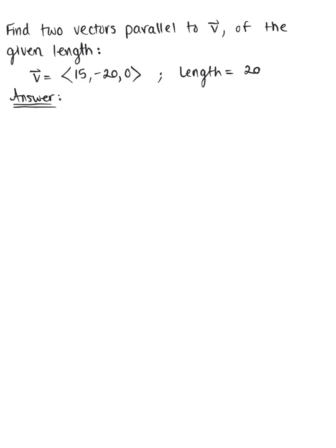Find two vectors parallel to V of the given length. So here we have vector V defined by the components 15, negative 20, 0. And we want this new vector to have a length of 20.